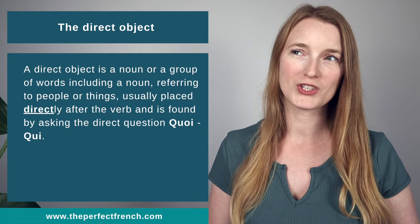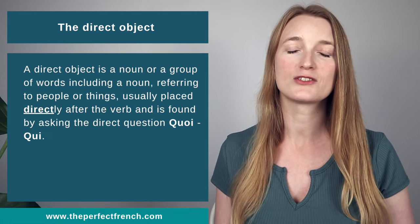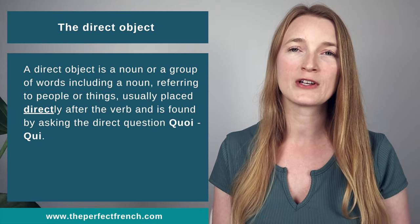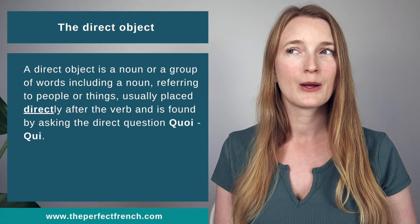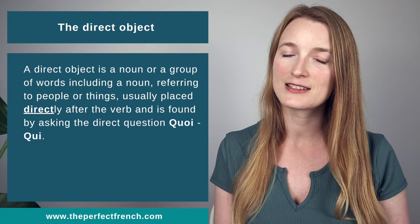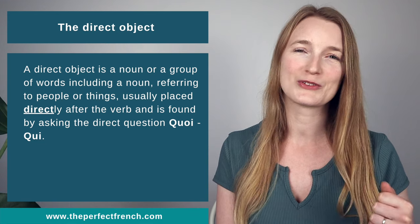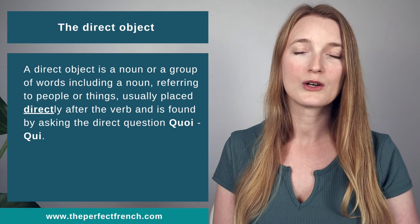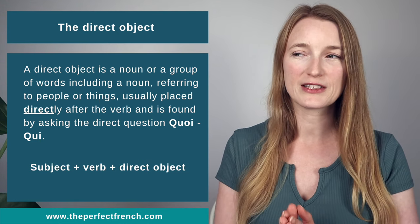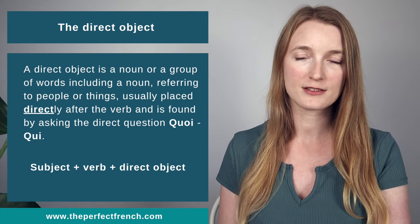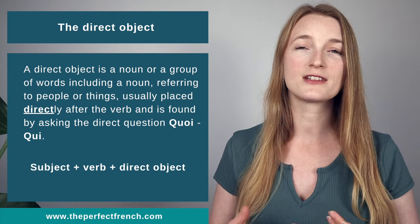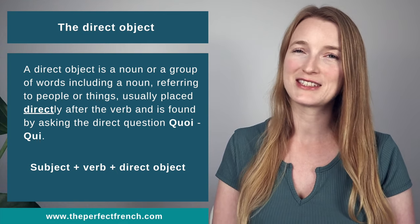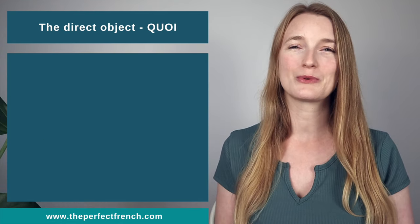So first, what is a direct object? A direct object is a group of words including a noun referring to things or people placed directly after the verb. We can find it by asking the questions quoi ou qui? If you look at the pattern, we have subject, verb, direct object. You will see it's very easy — it's a lot of words, but it's the same in English. Let's jump right into it.